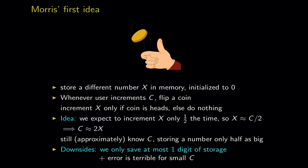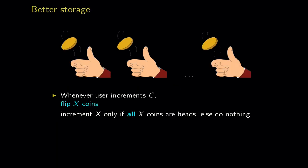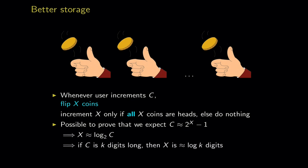To save more than one digit, be more lazy about updating: whenever the user increments, instead of flipping one coin, flip x coins — where x is the number stored in memory — and increment x only if all x coins are heads. When x gets bigger it becomes rarer to actually increment it. You can prove that the expectation of 2^x - 1 is exactly the counter value c, so x is roughly logarithmic in c. If c is k digits long, x is about log k digits — an exponential gain in storage.